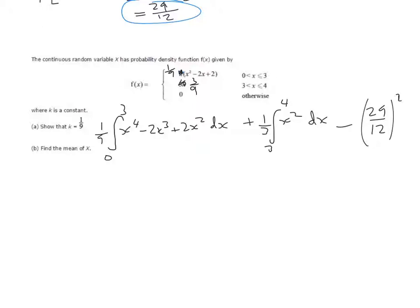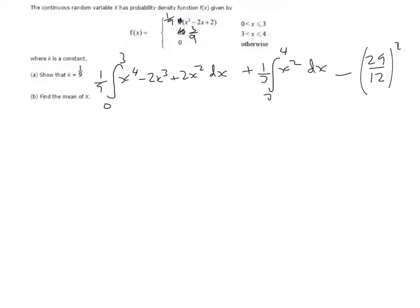Let's start by integrating this first function. We're going to get one ninth times x to the power of 5 over 5, minus 2x to the power of 4 over 4, plus 2x to the power of 3 over 3.